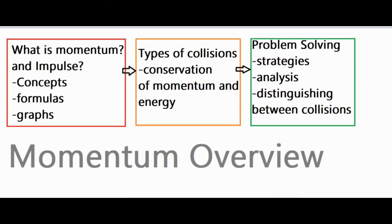In this video, I'm going to be doing a full momentum overview for AP Physics 1, which will be a good review for any high school physics class or introductory college classes as well. We're going to check out what momentum and impulse are, looking at those concepts, formulas, and a couple graphs. Then we'll move on to different types of collisions and conservation of momentum and energy. Finally, we'll look at problem-solving methods and strategies, analyzing different kinds of collisions and distinguishing between them based on descriptions and numerical values.